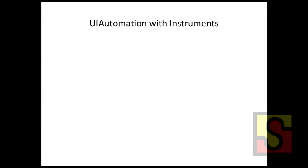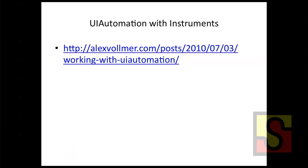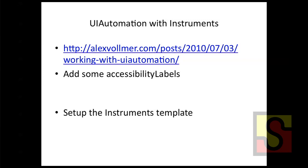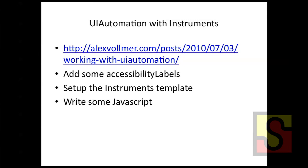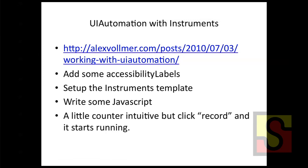So I followed his instructions, added some accessibility labels, set up the Instruments template, and wrote some JavaScript — just pure JavaScript. Instruments will interpret your JavaScript and you can even use import or other things. One thing that's a little strange: the Record button starts your script, not a playback button. The reasoning is that the tool is really for profiling — recording CPU usage, memory leaks, and things like that. And it actually works — okay, good.